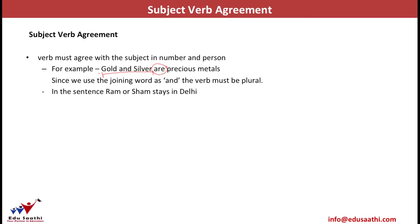In the sentence 'Ram or Shyam stays in hotel,' we use the conjunction 'or,' which means either one — only one at a time — will stay at the hotel. Since only one is staying, we use a singular verb: 'stays.' But if we replace 'or' with 'and,' both are staying, so it would take a plural verb: 'stay.'